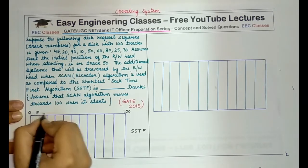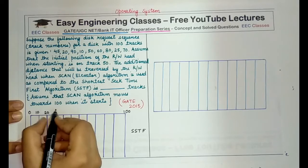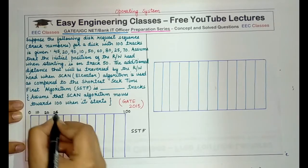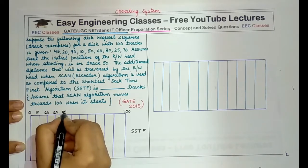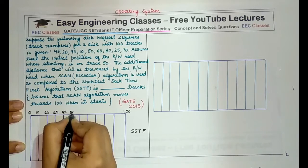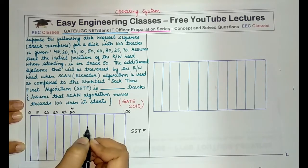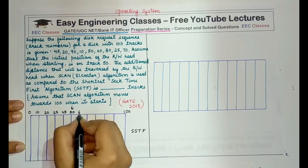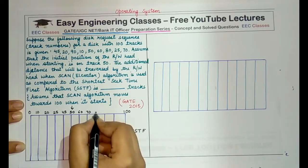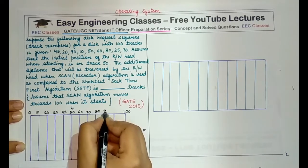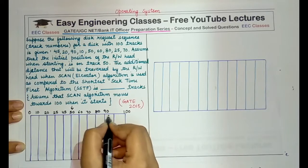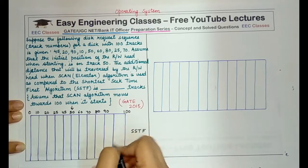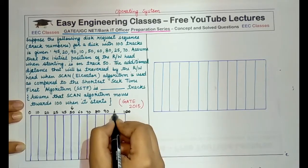So the disk requests can range from 0 to 100 and the increasing order in which the requests are made is 10, 20, then we have 25, then there is 45, then 50. 50 is the current position of the head. Then we have 60, 70, 80, 90, and please ignore this line, and this is 100. You can write 100 here.